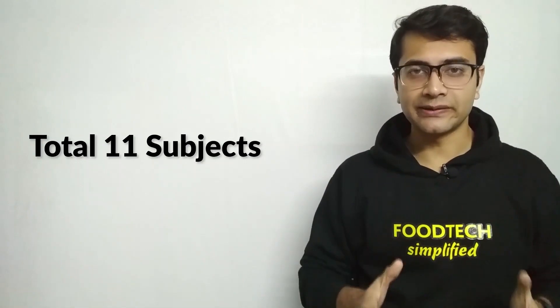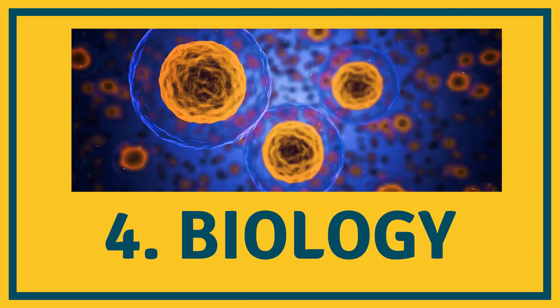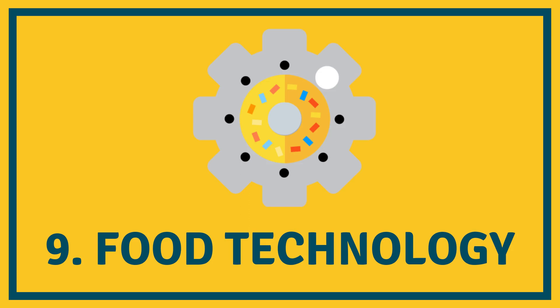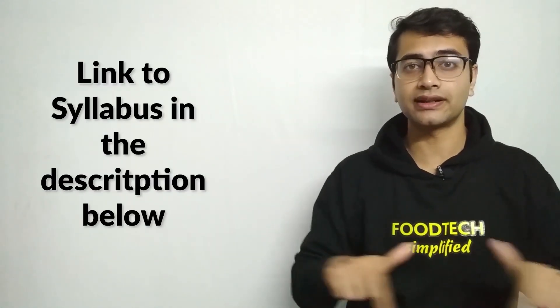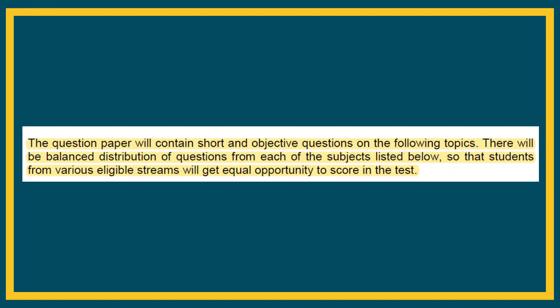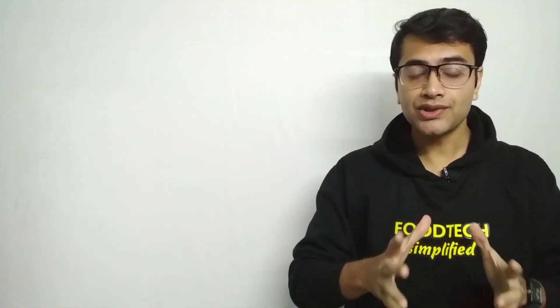There are a total of 11 subjects: Physics, Chemistry, Mathematics, Biology, Microbiology, Biochemistry and Nutrition, Agriculture and Dairy Technology, Engineering, Food Technology, Horticulture, and Home Science. I will put a link in the description for the full syllabus. The question paper will have objective type questions, and CFDRI has clearly mentioned that there will be a balanced distribution of questions from each subject, so students from various streams get equal opportunity to score.